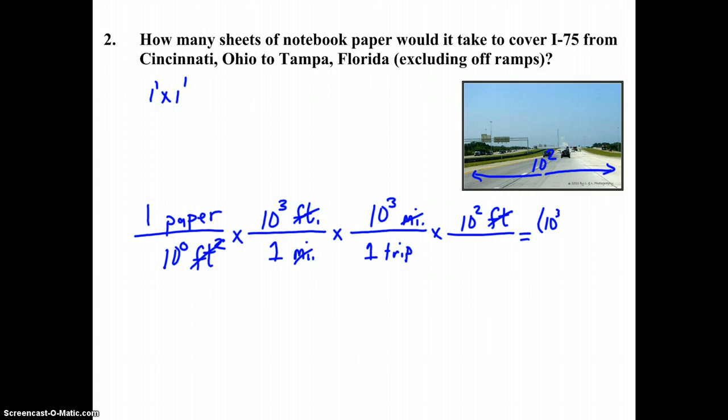In the numerator, we have ten to the third times ten to the third times ten to the second. In the denominator, we have one, one, and one. Ten to the zero. So, ten to the third times ten to the third times ten to the second, three plus three plus two, six and eight. Ten to the eighth sheets of paper per trip from Cincinnati to Florida to cover the interstate.